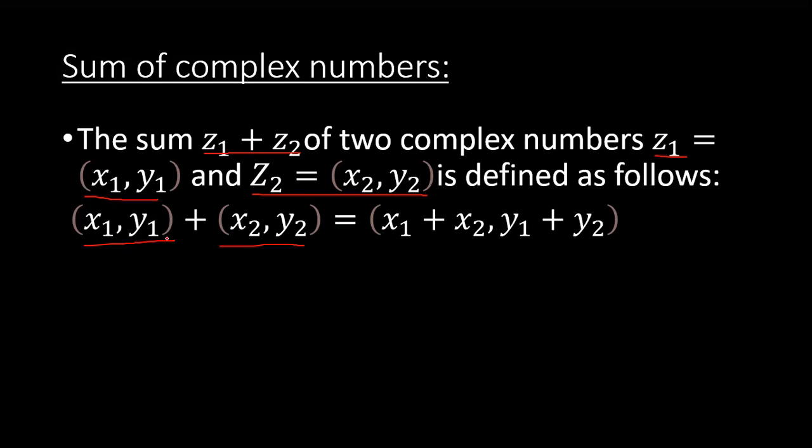In this sum, if we take the sum of these two complex numbers, we have to add up the corresponding coordinates. We add x1 with x2 and y1 with y2, so it becomes (x1 + x2, y1 + y2). That's all about the sum of complex numbers.